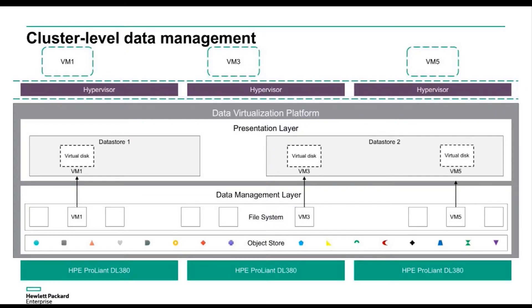Let's dig in a little with graphics, since it's easier to tell a story with a picture. Here we have what we call clusters — multiple SimpliVity nodes together in a single cluster, based around the vSphere construct of a cluster or the Hyper-V construct of a cluster. Simply by adding nodes, they find each other and build a SimpliVity cluster together, integrating into the hypervisor management.